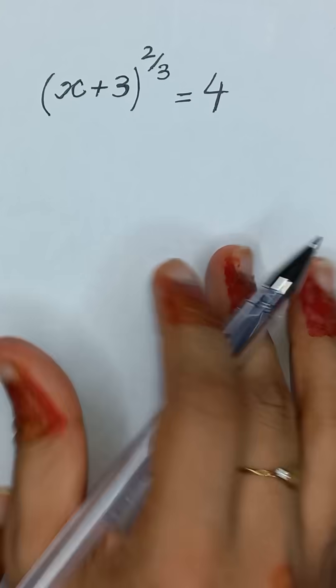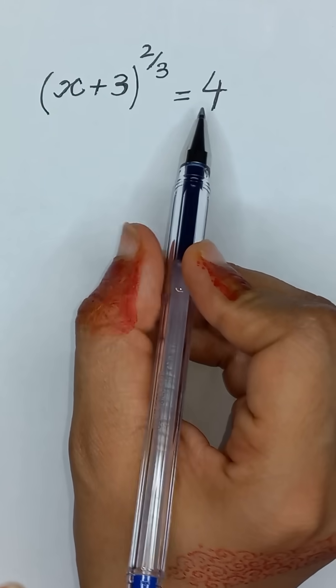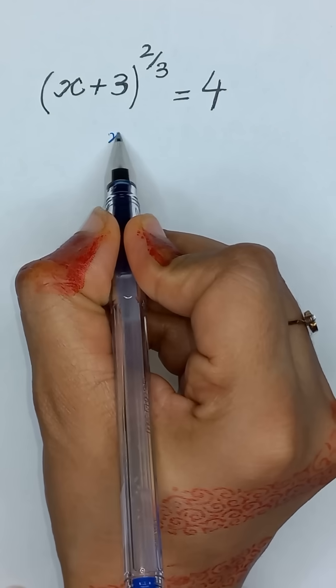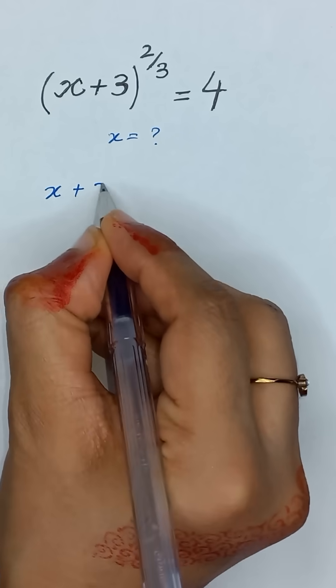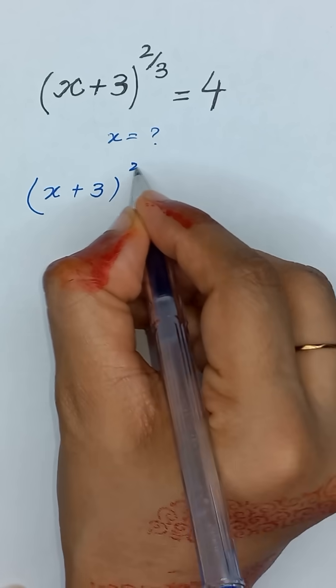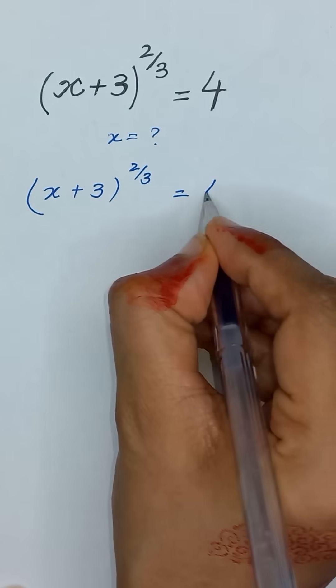x plus 3 to the power 2 divided by 3 is equal to 4. So we will solve for x. It is given that x plus 3 to the power 2 divided by 3 is equal to 4.